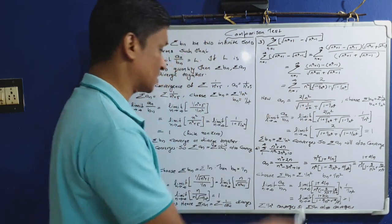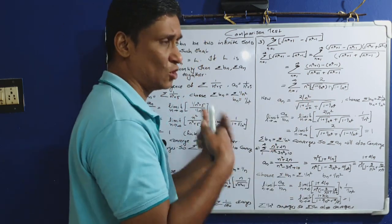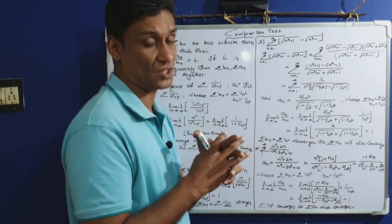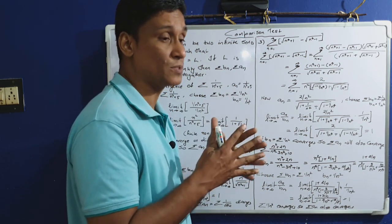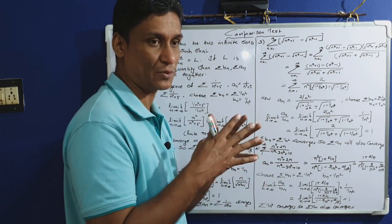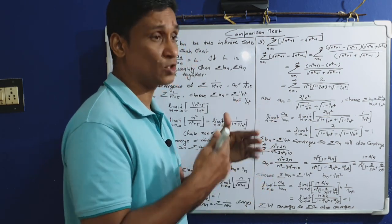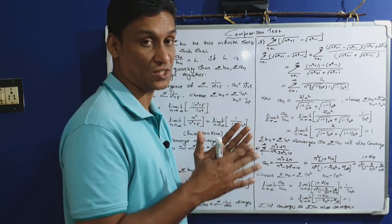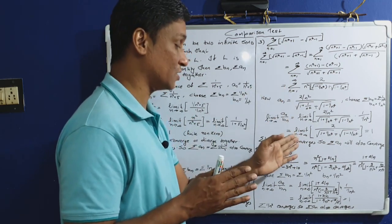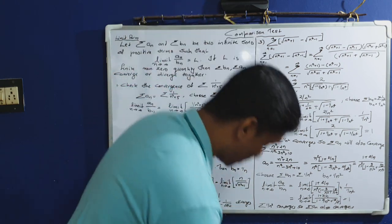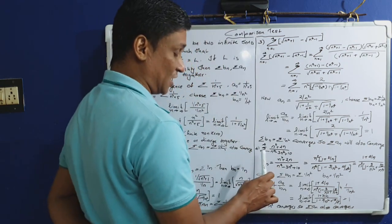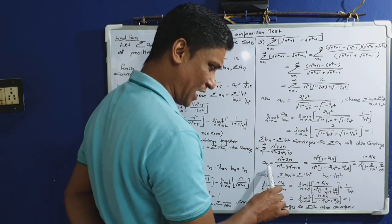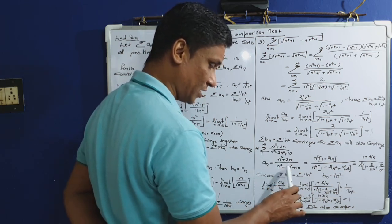Now there are more problems to work out. Check the convergence of sigma from n equal to 1 to infinity of (n²+2n) divided by (n⁴ − 3n²+10). Write a_n equal to (n²+2n) divided by (n⁴ − 3n²+10). The dominant terms cancel: n² in the numerator and n⁴ in the denominator suggest comparing to 1/n².